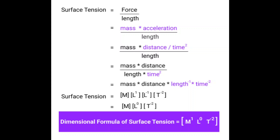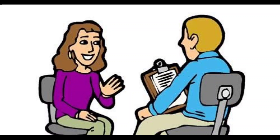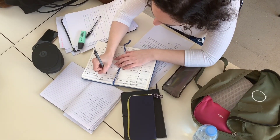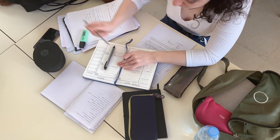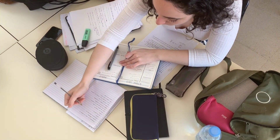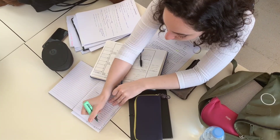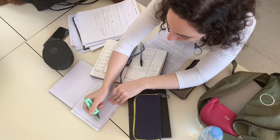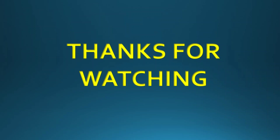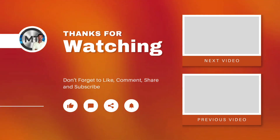The dimension formula for surface tension is M¹L⁰T⁻². Students, in the next video we can see the remaining topics. Thanks for your support. Thank you students, bye bye.